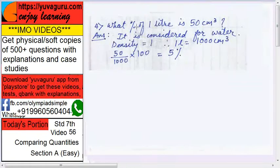What percent of 1 liter is 50 cubic centimeter? So here, 1 liter and centimeter, you have to convert liter into cubic centimeter. Remember, it is considered for water only. Why? Because liter if you want to convert it to cubic centimeter, then the density is considered as 1.